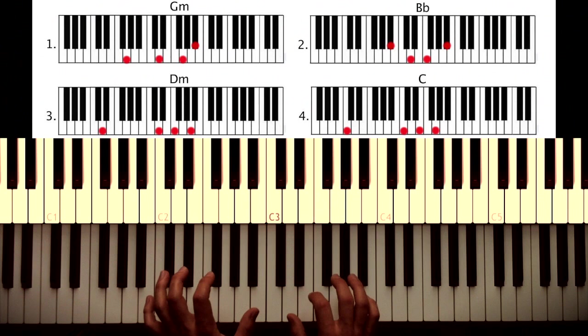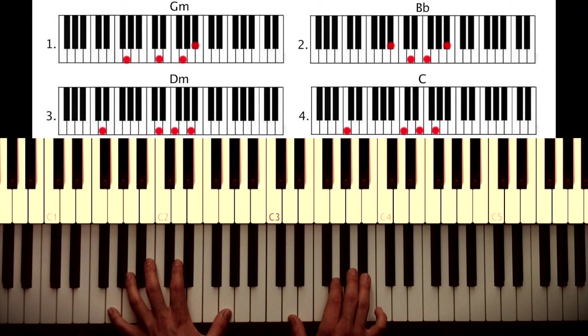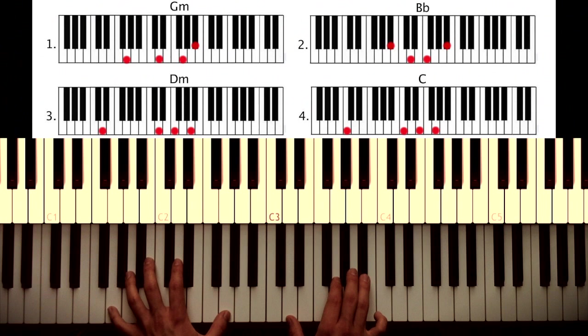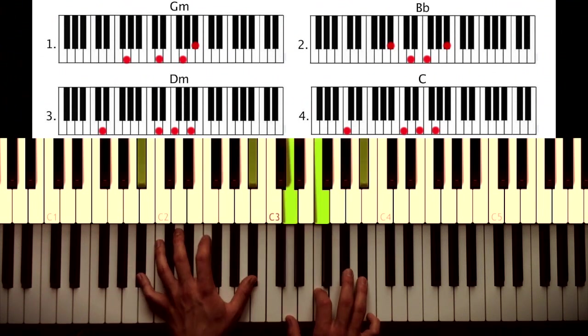So it's the same pattern over all those chords. I'll do it slowly over at G minor: together, together, yeah, together right, left, right, left, right, right. Okay, then over to the next chord, same thing.